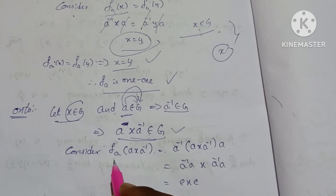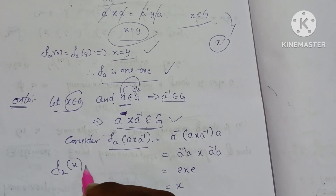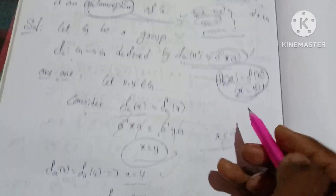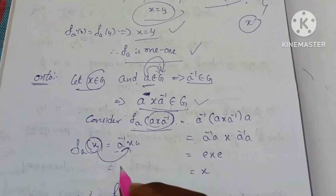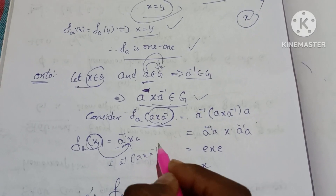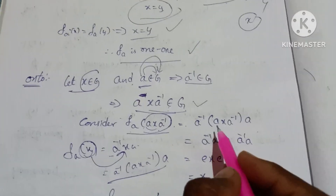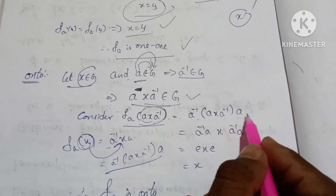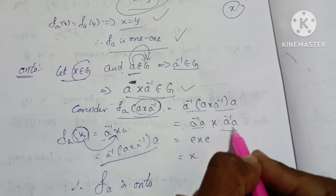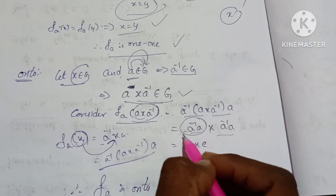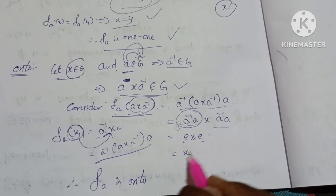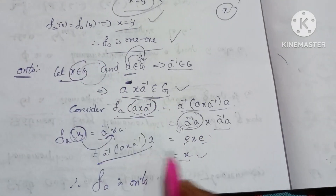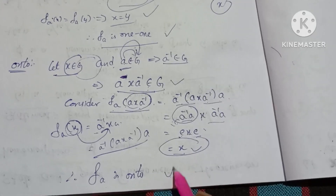Consider f_a of (a x a inverse). We know f_a(x) equals a inverse x a. So f_a(a x a inverse) equals a inverse times (a x a inverse) times a. The a inverse and a cancel to give the identity e, and a inverse and a on the right also cancel, leaving x. Therefore f_a is onto.